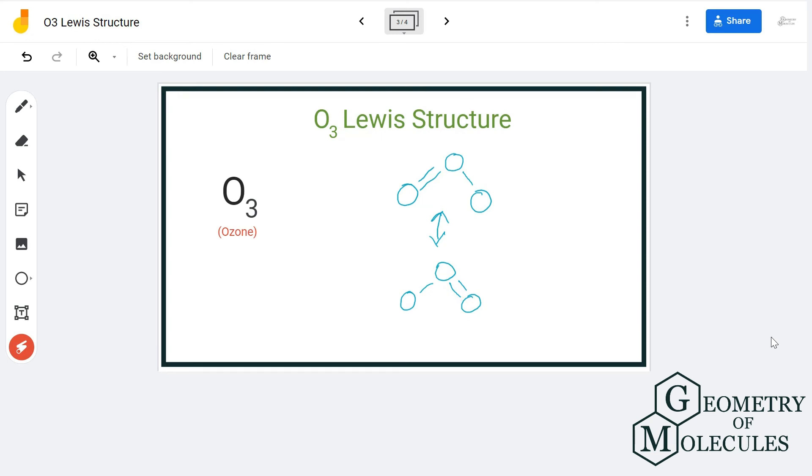There are these resonance Lewis structures of O3 in which either of these oxygen atoms have a double bond, and the structures are shown like this. So this is the Lewis structure for O3.